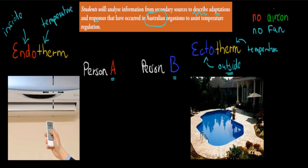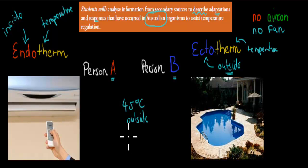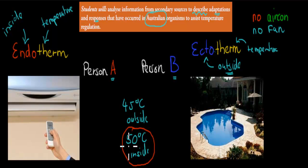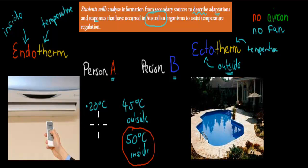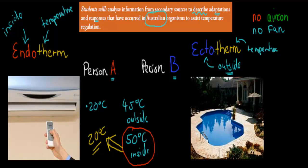Person A has bought a very nice aircon, so it might be 45 degrees outside, and with no aircon or fan it might even be 50 degrees Celsius inside. Both person A and person B would like to bring that temperature down. So person A will use the aircon — he'll set it at maybe 20 degrees Celsius, and the aircon will do that job. Person A is happy because he can be inside his home at 20 degrees Celsius, even though the outside temperature is 45 degrees.